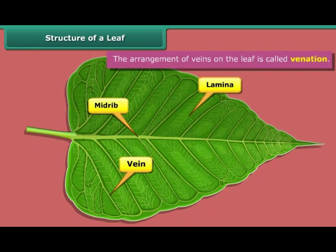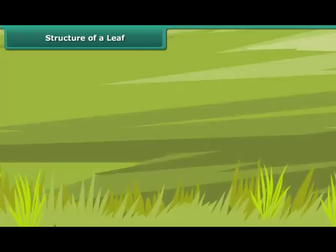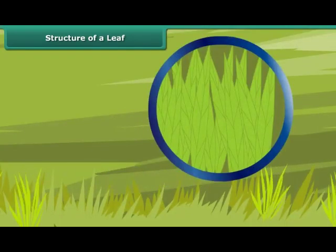When veins appear to branch from the midrib, the venation is called reticulated venation. When the veins run parallel to one another, the venation is termed as parallel venation. This type of venation is generally found in the leaf of grass.